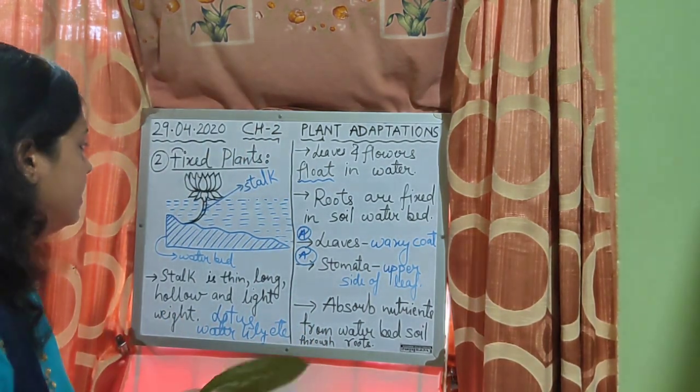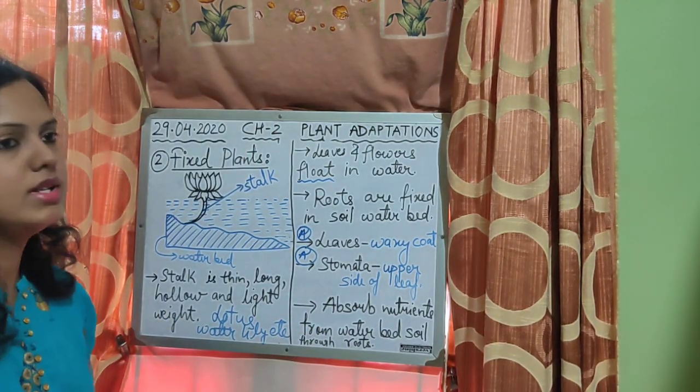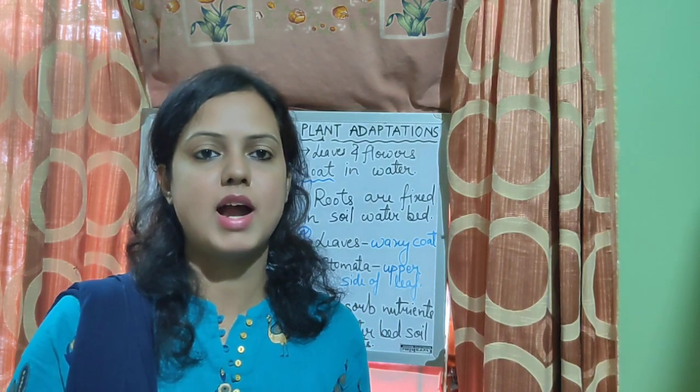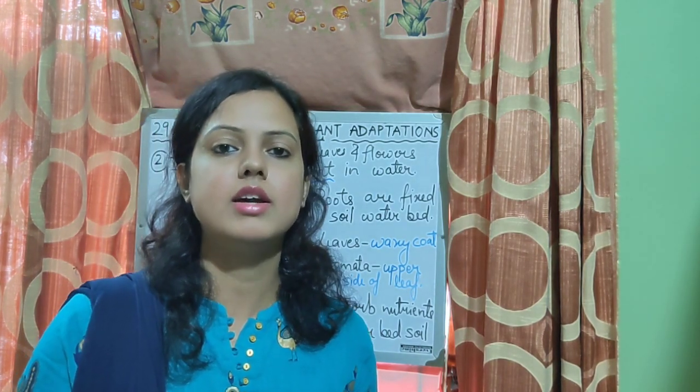Now in the next video, we'll see the third type — that is submerged plants, or underground plants.